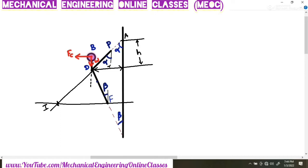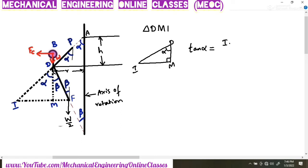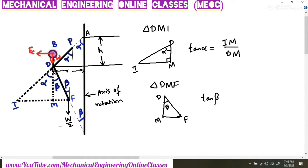We draw a perpendicular from D onto line IF, with intersection point M. From triangle DMI, tan alpha equals IM divided by DM (opposite by adjacent). Similarly, from triangle DMF, tan beta equals MF divided by DM.